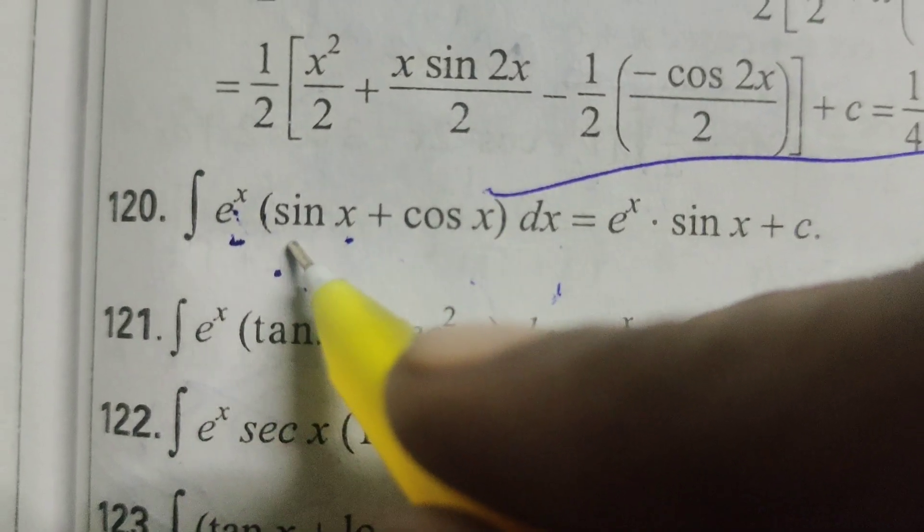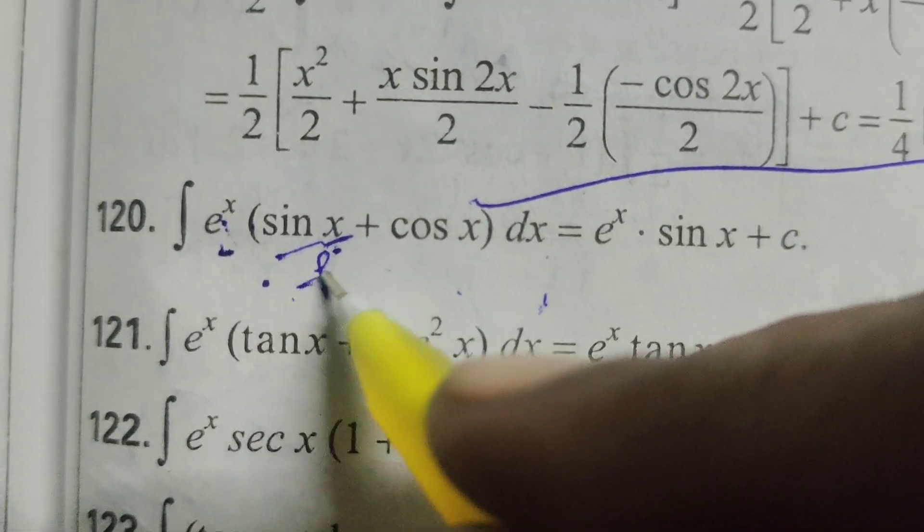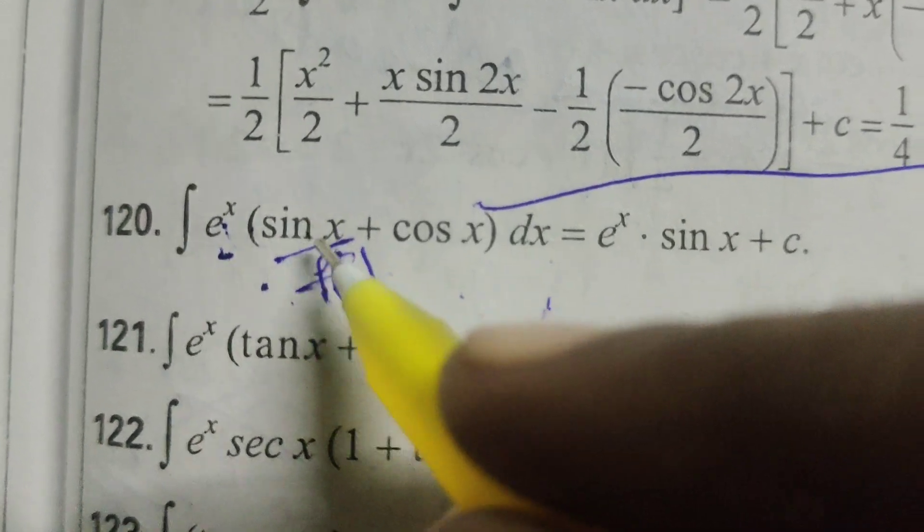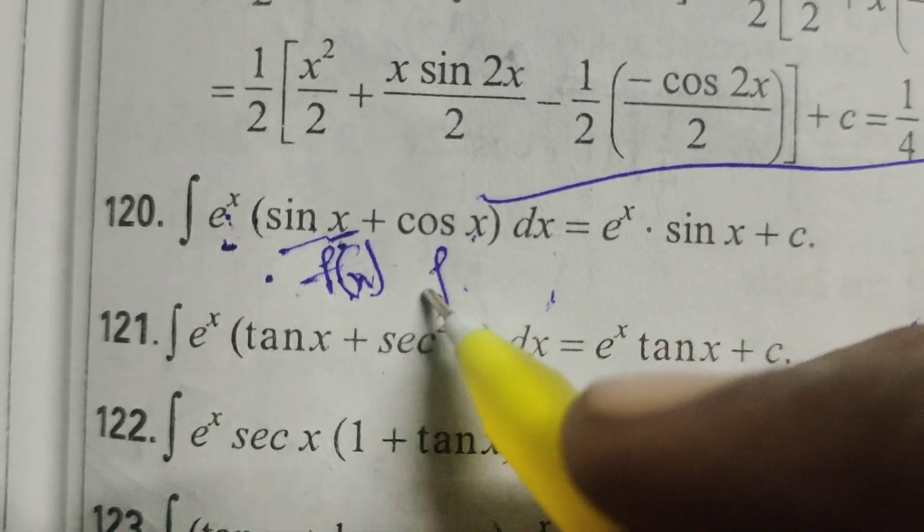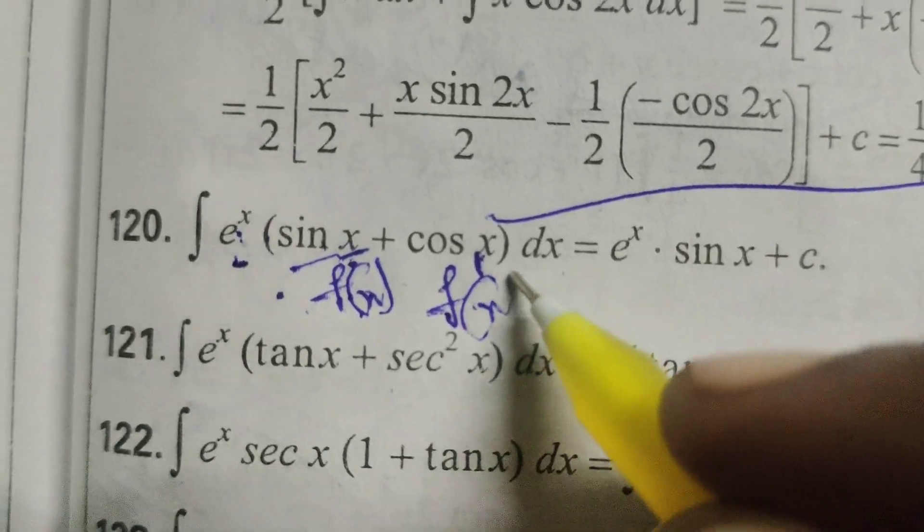Here suppose this is considered f of x. Differentiate this, we will get here cos x, so f dash of x.